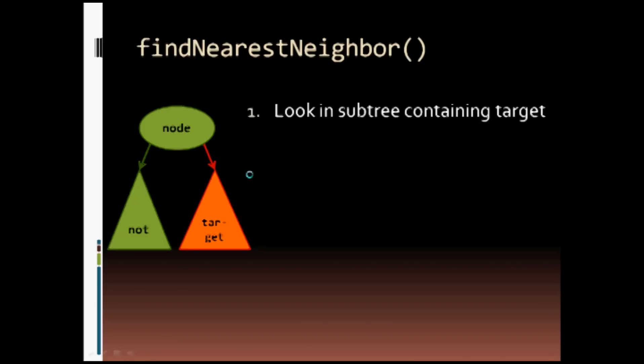First of all, we will look in the subtree containing the target. This is almost like an in-order traversal. So we find out what subtree contains the target. Here we have a conveniently labeled target subtree.